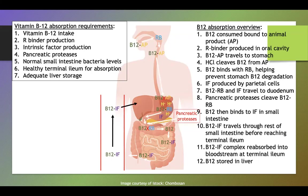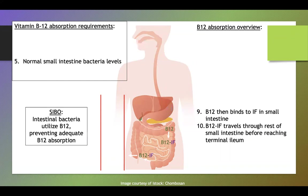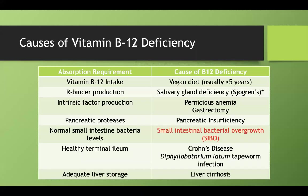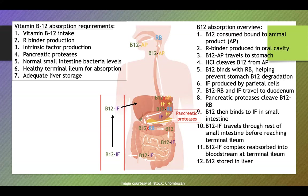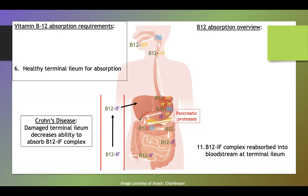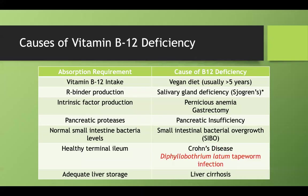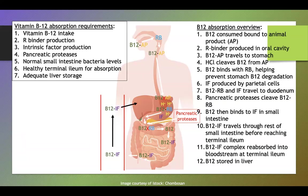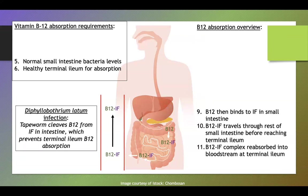Causes of B12 deficiency include: pernicious anemia or gastrectomy causing deficient intrinsic factor production; pancreatic insufficiency, where proteases can't cleave B12 from the R binder; small intestinal bacterial overgrowth, where bacteria consume B12 before it can bind intrinsic factor; Crohn's disease damaging the terminal ileum so the B12-IF complex can't be reabsorbed; and tapeworm infection, which cleaves the B12-intrinsic factor complex.